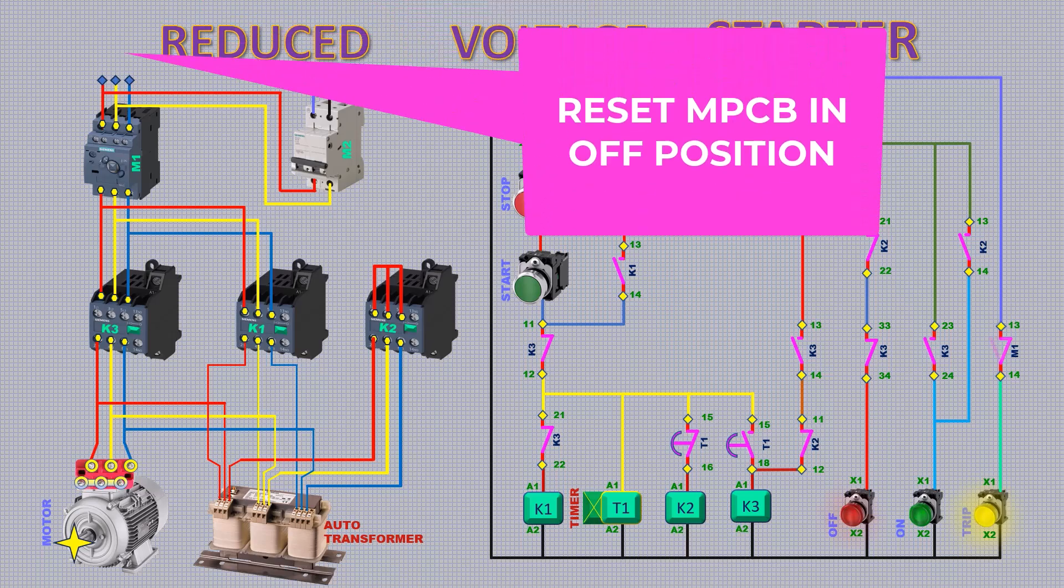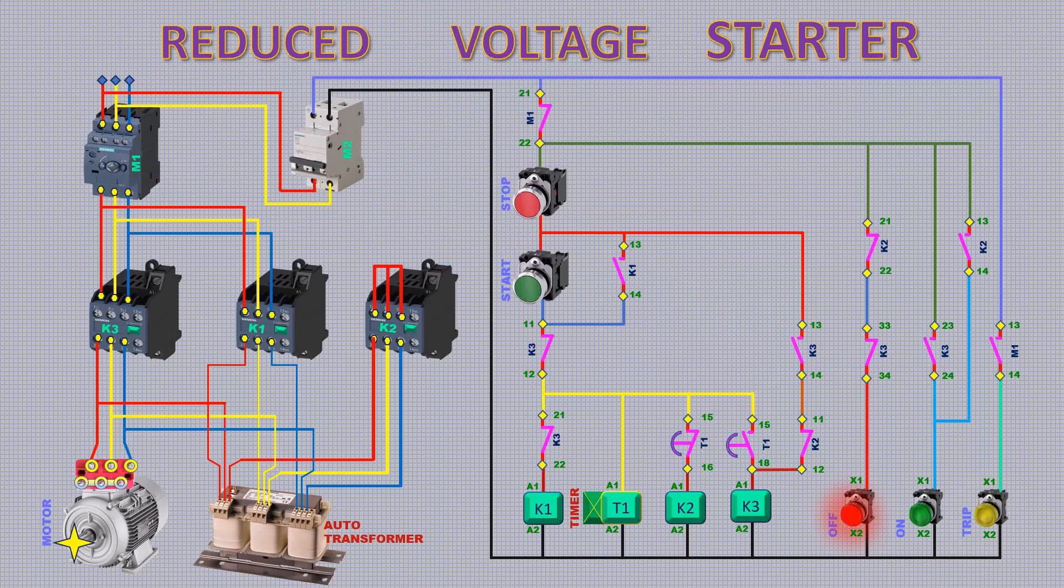Reset MPCB in the off position. Again start the MPCB to see the D-phase voltage and the control circuit condition.